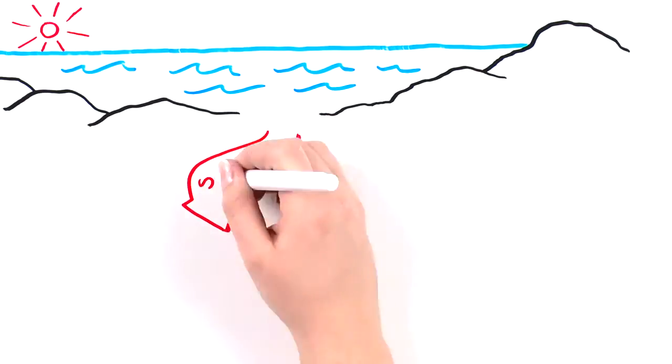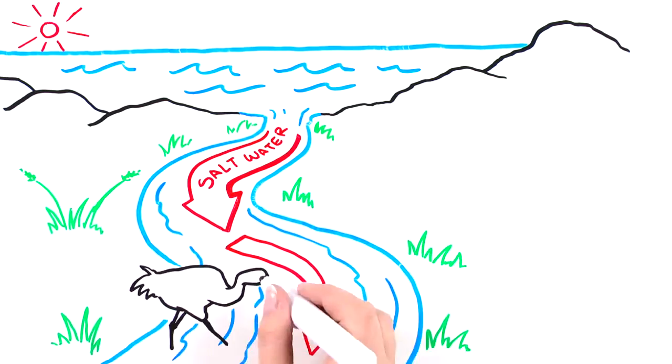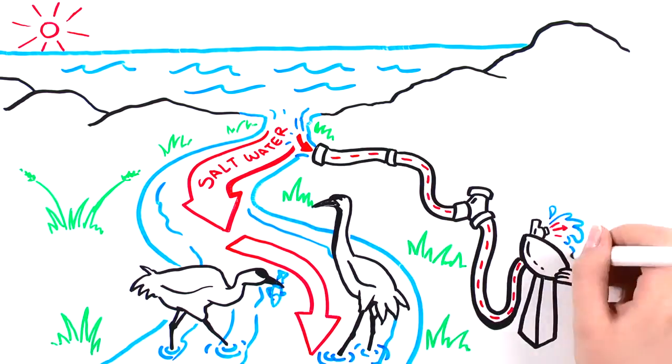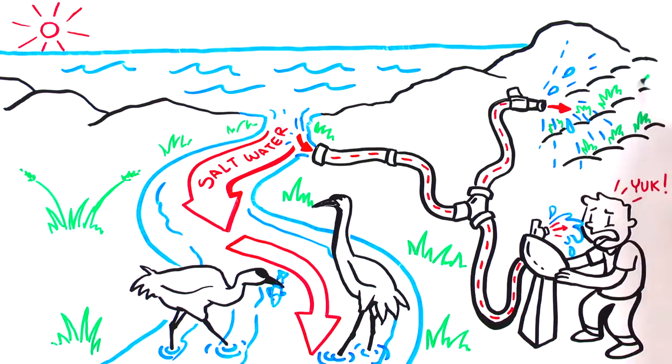And as the ocean rises, its saltwater can mix with our rivers and groundwater, which is where many people get fresh water for drinking and farming.